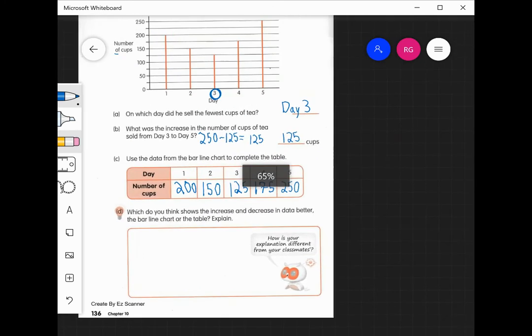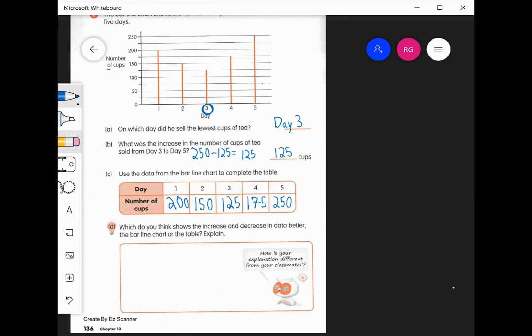So just look at these and talk about which one can you see that increase and decrease? Would it be the bar line chart up here or would it be the table? Which one do you see the increase and decrease better?